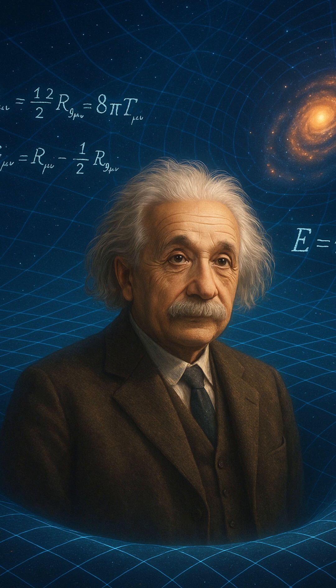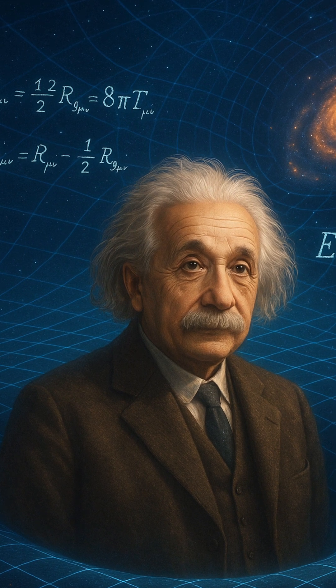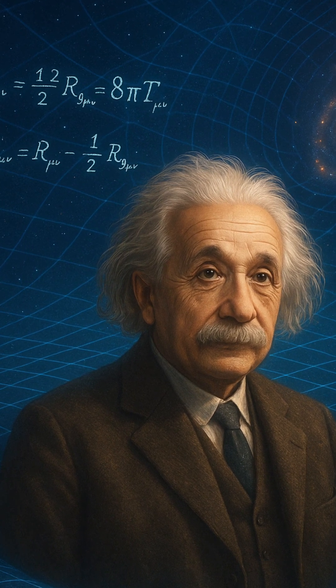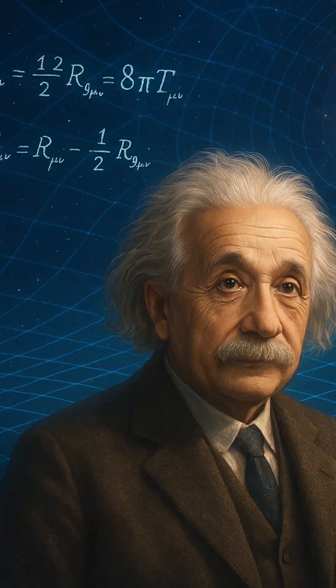Before Einstein, space and time were seen as two separate entities. Space was the arena where objects moved. Time ticked forward, steady, and absolute.